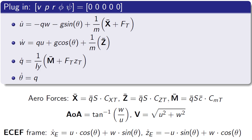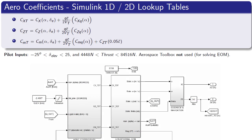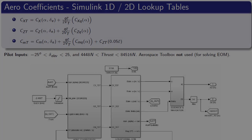Here is an illustration of the aero coefficients. You can see how they are a function of the angle of attack alpha and the elevator angle delta E. Similarly, the pilot inputs are also saturated between negative 25 and 25 degrees for the elevator, and about 4,400 to 84,000 for the force.